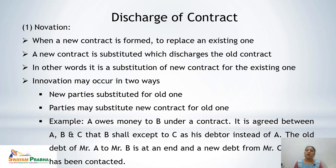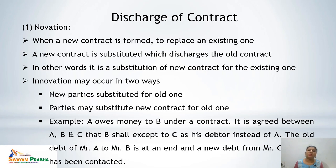For example: A owes money to B under a contract. It is agreed between A, B, and C that B shall accept C as his debtor instead of A. The old debt of A to B is at an end and a new debt from C to B has been contracted. In novation, either the parties may change or the parties may remain the same but the terms of the contract may change, but this must be with the consent of all parties involved.